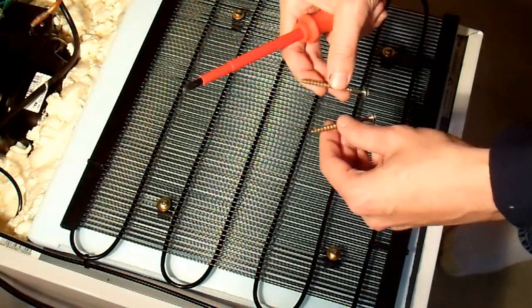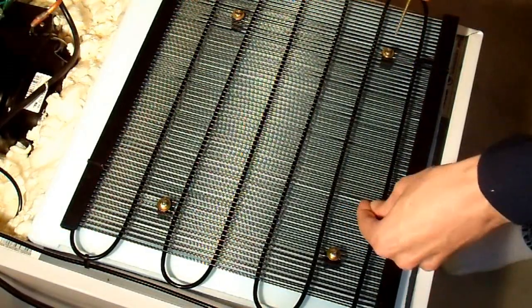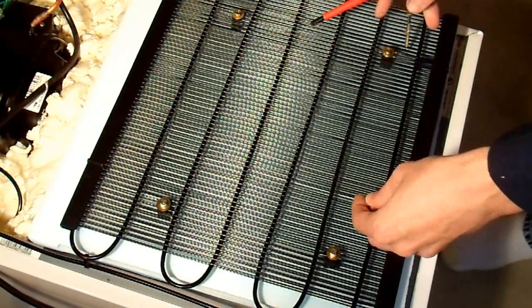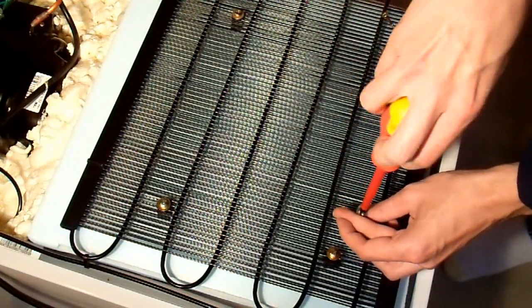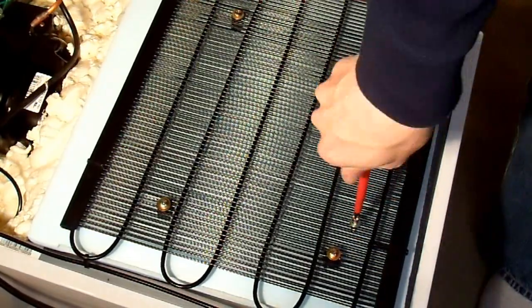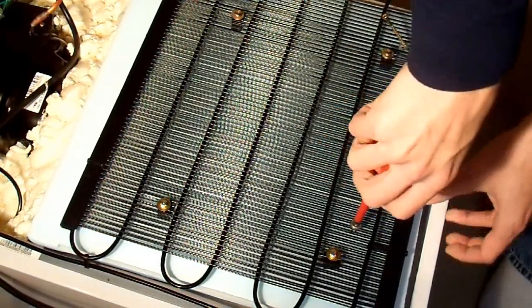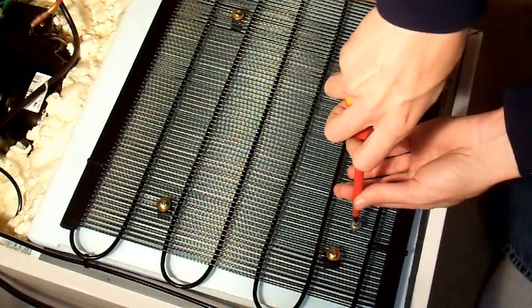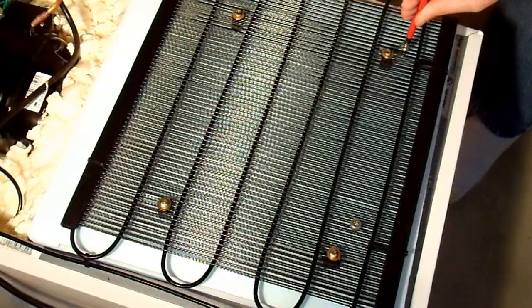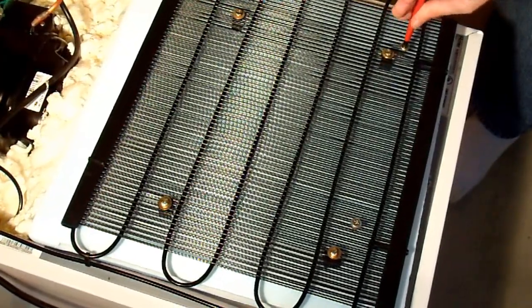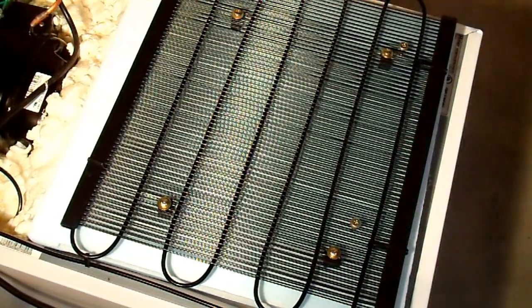I have these drywall screws. I just put a washer on each one and I'm just going to attach this to the refrigerator. These should be long enough to go all the way through and enter the refrigerator. And then everything will be connected together. And I won't have to worry about it anymore. There we go. Now it's a nice solid assembly.